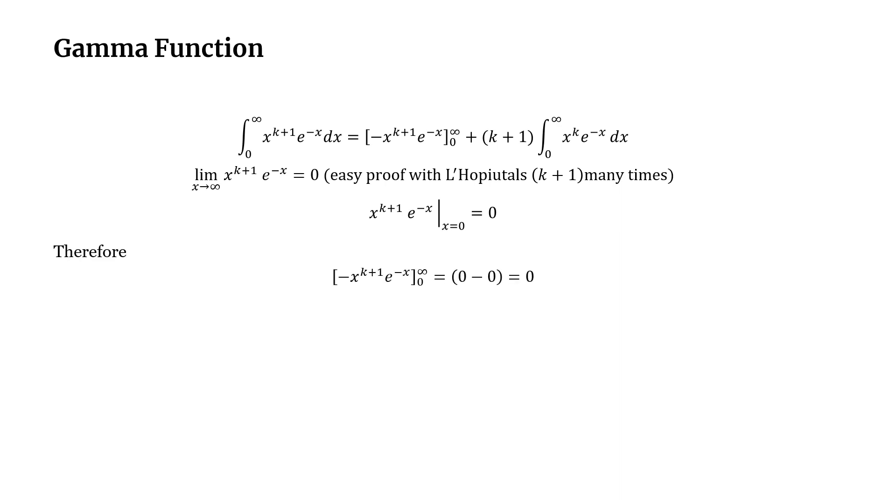And what we need to do is to actually evaluate the definite integral of the first term going from zero to infinity. And for the evaluation of the limit for the infinity, what you can do is to L'Hôpital k plus 1 many times and showing you that it's a zero. But that's quite obvious because as you know, whatever the power of the polynomial, we know that the exponential is a lot more faster decaying. So it should become zero. But you can show it by L'Hôpital many times. And then for the second one, evaluating at x equal to zero will result in zero.